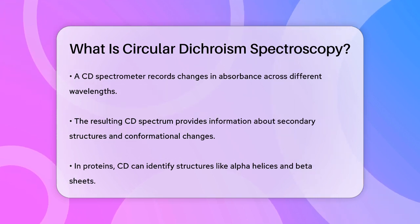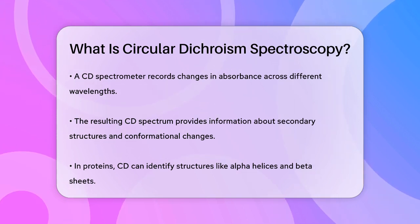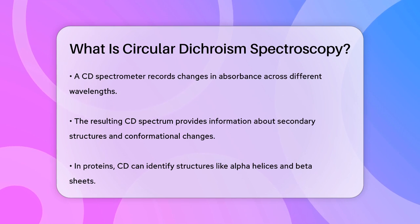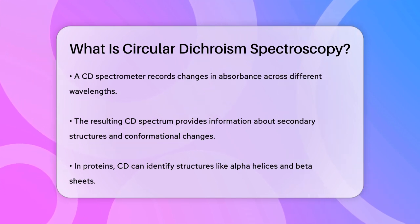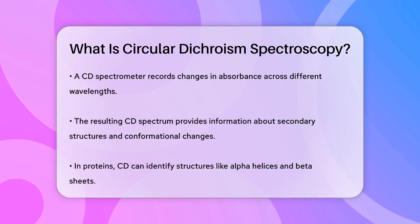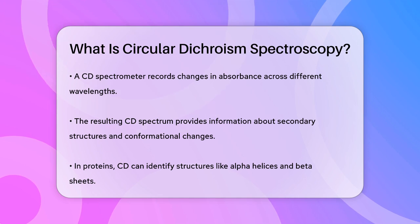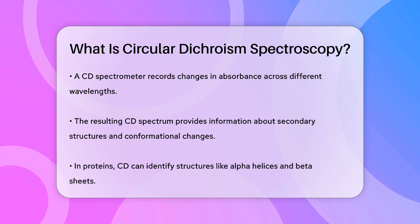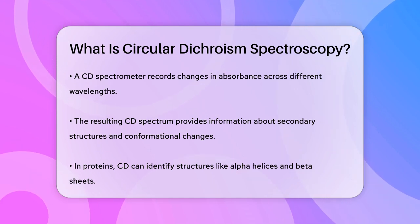For example, in proteins, CD spectroscopy can reveal the presence of alpha helices, beta sheets, and random coils. It's also used to analyze the conformation of nucleic acids.